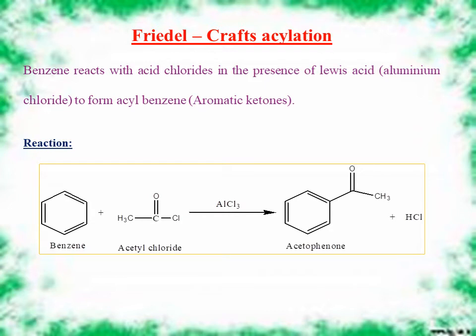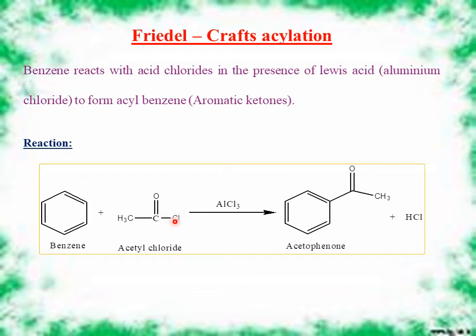The next reaction is Friedel-Crafts acylation of benzene. In this reaction, an acyl group is attached to benzene to give acyl benzenes. Benzene reacts with acid chlorides in the presence of a Lewis acid like aluminium trichloride to form acyl benzene — that is, aromatic ketones. In the reaction, benzene reacts with acetyl chloride: the Cl is taken up by aluminium, and the acyl group bonds to benzene, giving acyl benzene with loss of HCl.